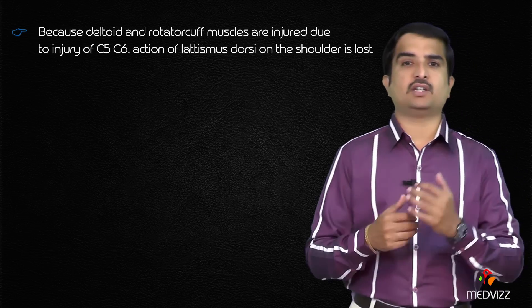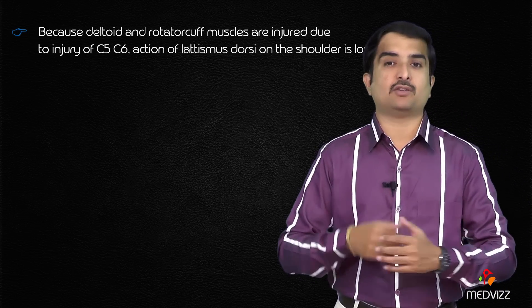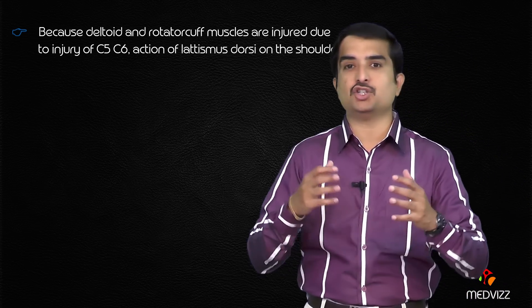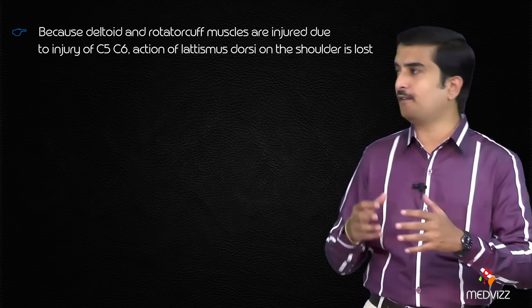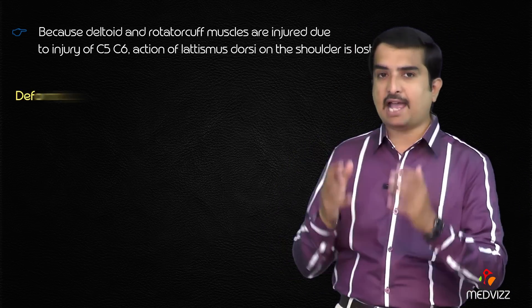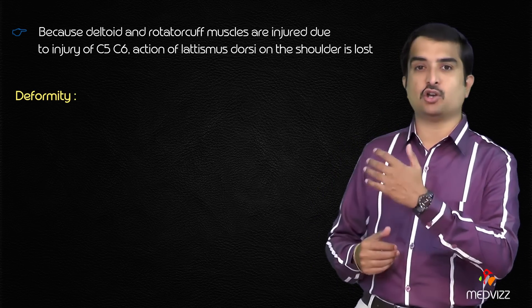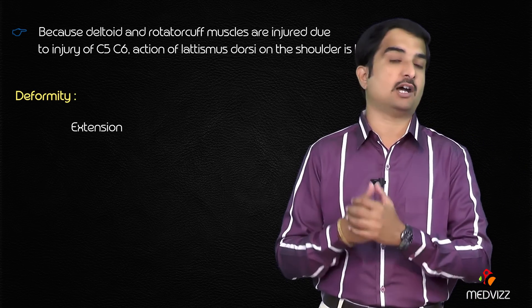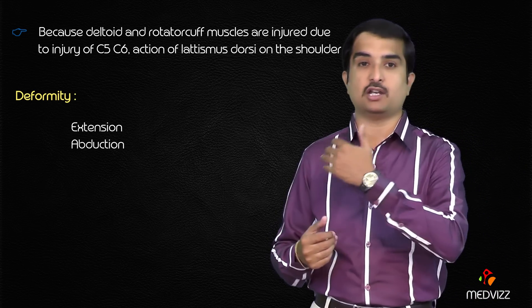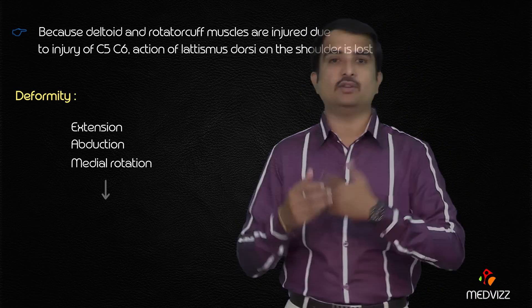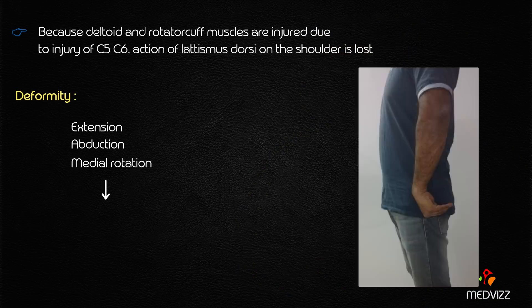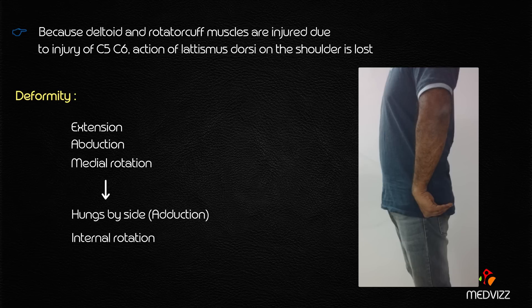Because the deltoid and rotator cuff muscles are paralyzed due to injury of C5 and C6, the action of the latissimus dorsi on the shoulder — extension, adduction, and medial rotation — is unopposed. Therefore, the arm hangs by the side in adduction and is internally rotated, which is also called medially rotated.